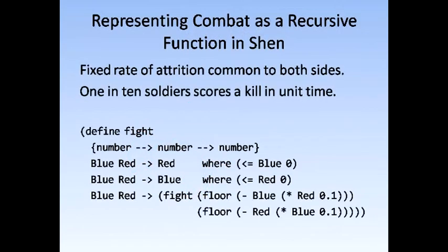Here is the function coded in Shen. The function is called fight. We've chosen to provide the type of this function, though types are optional in Shen. The first two rules are simple: if either army has been reduced in size to a non-positive number, we return the size of the other force. The last line is the recursive step. We are simulating continuous fighting by gauging the effects of attrition and feeding the survivors back into the fight. We multiply each side by 0.1 and subtract the result from the opposite side — the remaining red army is diminished by one tenth of the blue army, and vice versa. We're not much interested in fractions of a soldier, so we round downwards using floor to ensure the computation ends with zero or less.